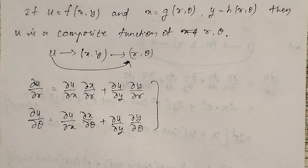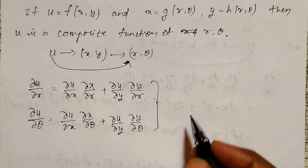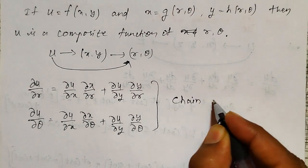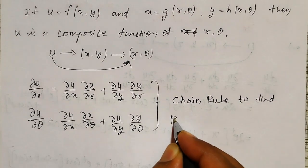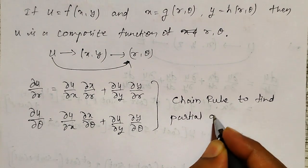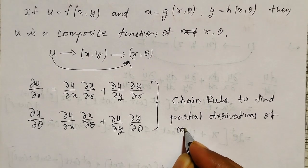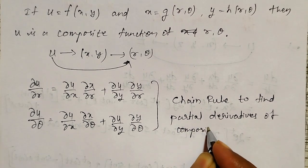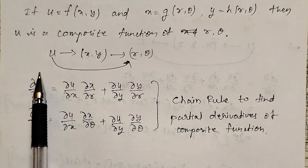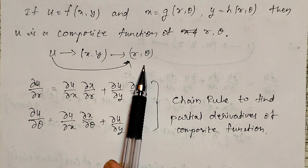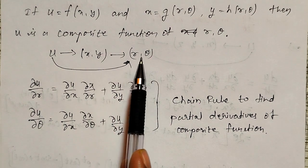This rule to find out ∂u/∂r and ∂u/∂θ is known as the chain rule — the chain rule to find the partial derivatives of composite functions. Here I considered u as a function of x and y, and x and y are functions of r and θ, so u depends on two variables and those two depend on two variables.